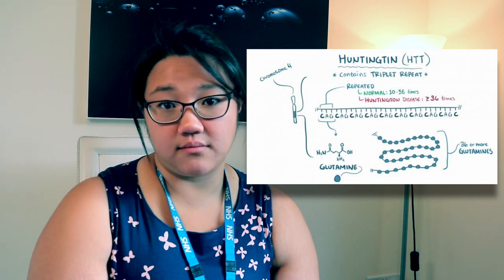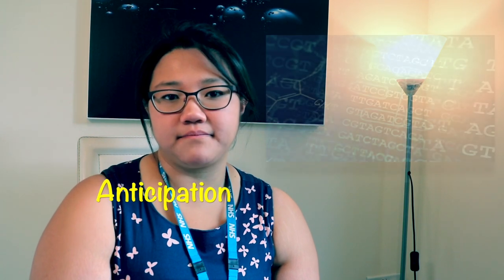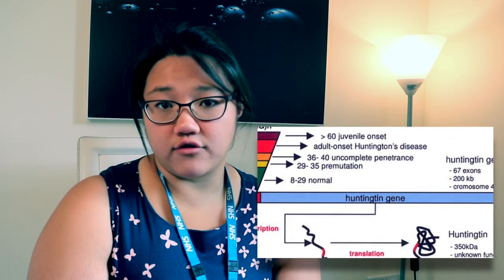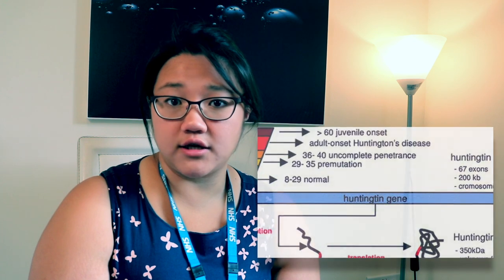Usually it's picked up through genetic testing, sent off whenever people have symptoms suggestive of the disease or have family members who have got the condition already. Because of the type of mutation it has, there's an extra phenomenon called anticipation, meaning patients in each subsequent generation will develop symptoms earlier in life — they'd be younger. Each time they have further children, those children will suffer at a younger age.